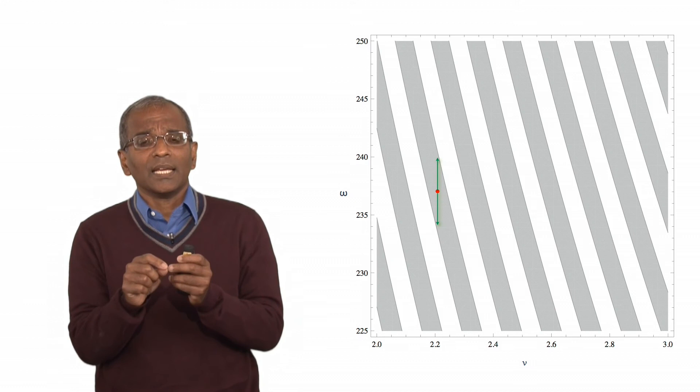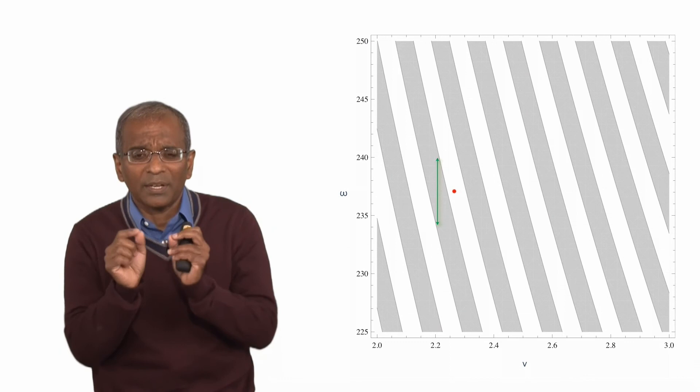What if there is uncertainty, translationally, in your velocity? Oh, but now the bands are very narrow. And so even a small uncertainty leaves a shaded band, goes into an unshaded band.